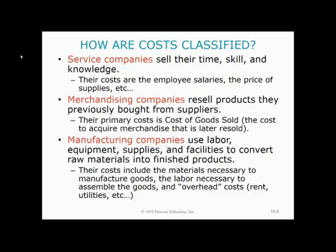A big difference this semester is we are going to focus a lot on manufacturing firms. All companies provide something to the public to make money — they either provide a service or they sell goods. Service companies have fairly easy books to keep: employee salaries and material costs, with no inventory. Merchandising companies resell inventory — they get goods from someone else who made them, mark them up, sell them to the public, and make their profit.